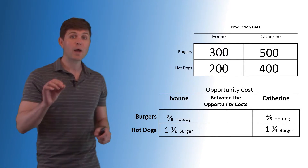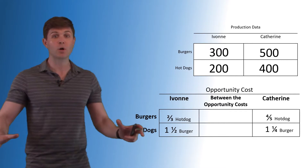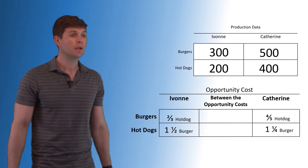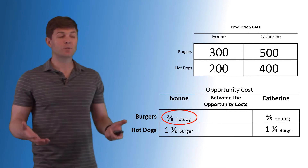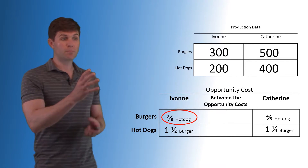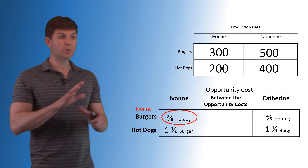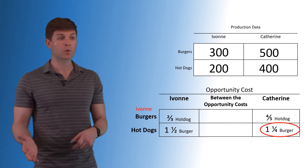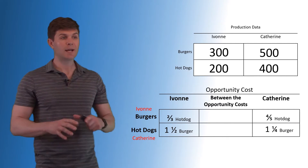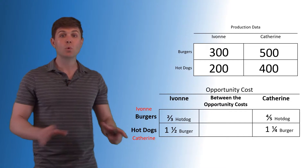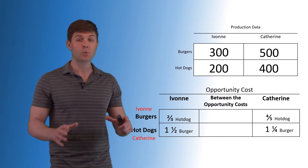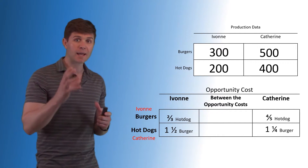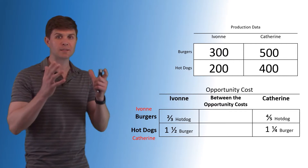The next thing we need to get is who has the comparative advantage. Getting all this done ahead of time before you even look at the questions is really beneficial because you don't make mistakes. We need to find out who has the lower opportunity cost. Yvonne, in terms of burgers, has the lower opportunity cost, so we put Yvonne's name there. When it comes to hot dogs, Catherine has the lower opportunity cost — one and a quarter burgers versus one and a half burgers. So Yvonne and Catherine — we've identified which item they have the comparative advantage in. The only thing missing at this point is the terms of trade, or what falls between the opportunity costs.